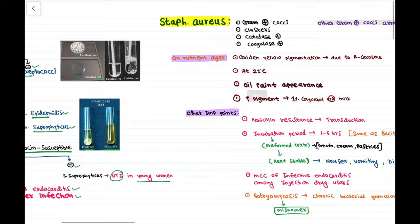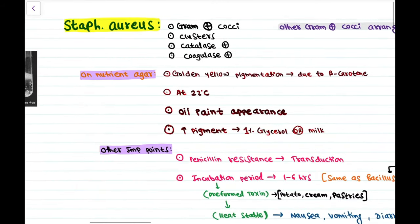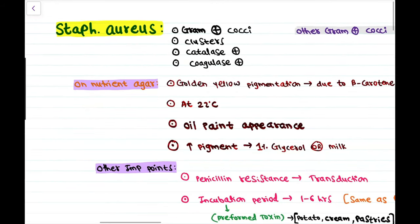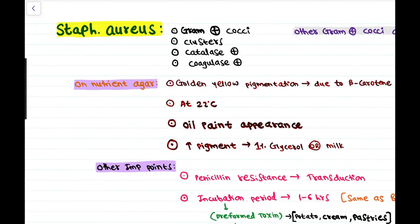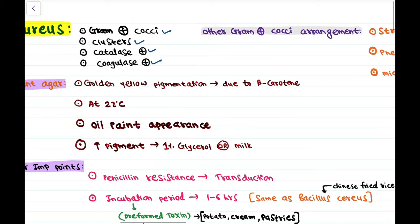Staph aureus is a gram positive coccus appearing in clusters. It shows catalase positive and coagulase positive reactions.